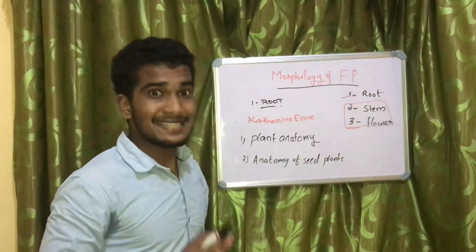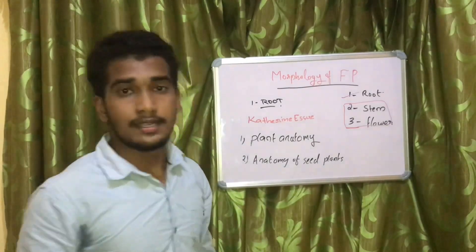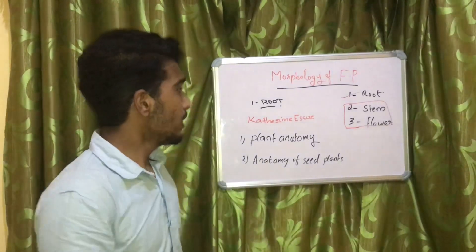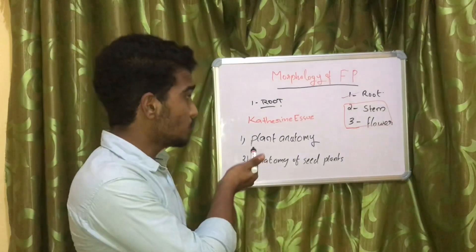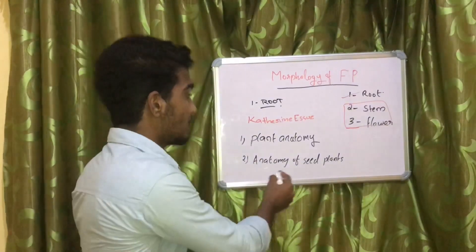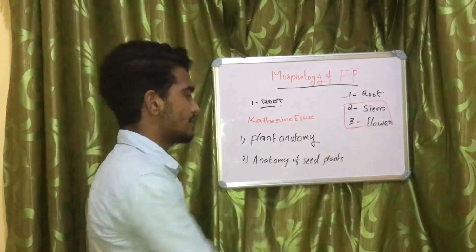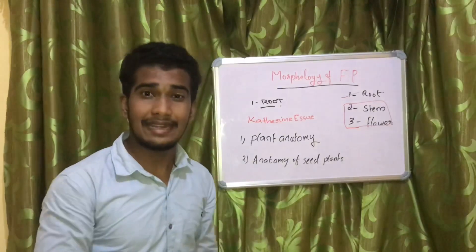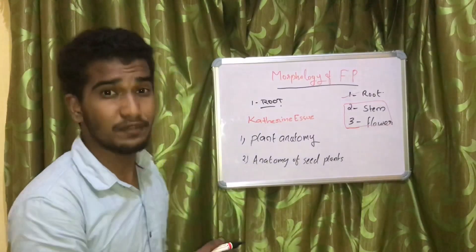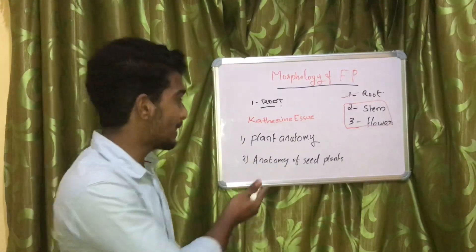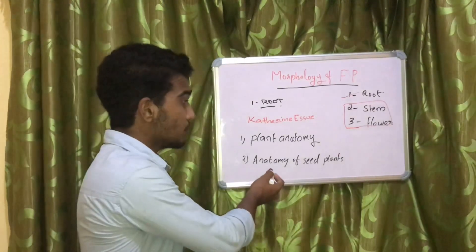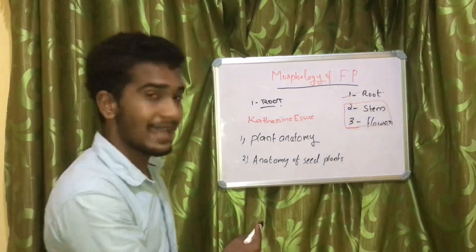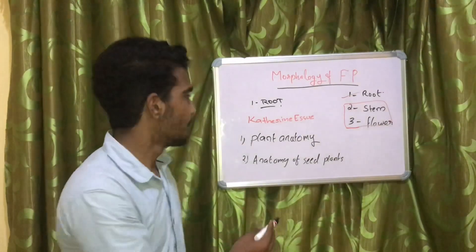We are discussing about the botanist Katherine Esau, a famous botanist. She wrote two books: Plant Anatomy and The Anatomy of the Seed Plants. The second book, The Anatomy of the Seed Plants, contains a large amount of information about plants and is also called the Webster of Plant Biology and Encyclopedia.